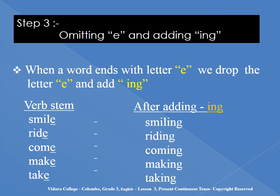Step 3: Omitting 'e' and adding -ing. Children, when a word ends with the letter 'e', we drop the letter 'e' and add -ing, because with 'e' we can't pronounce it properly after adding -ing. That is why we omit 'e' and add -ing. Verb stem examples: smile → smiling, write → writing, come → coming, make → making, take → taking.